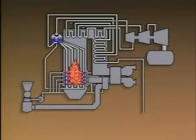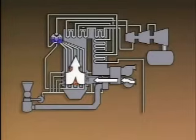Let's look at an illustration of a typical boiler to see how each of these elements fits into boiler operation. The oxygen needed for combustion comes from air supplied to the burners. At the burners, the air is mixed with fuel.